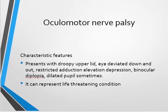The characteristic presentation features include drooping of the upper lid, that is ptosis, due to involvement of the levator palpebrae superioris muscle responsible for elevation of the lid. The eye is deviated down and out because of the unopposed action of the lateral rectus moving the eye laterally, and the unopposed action of the superior oblique causing depression and intorsion of the globe.